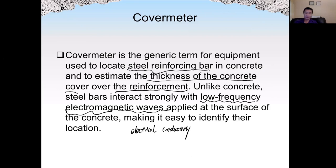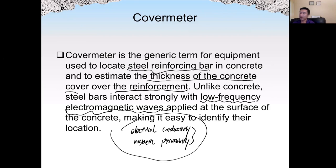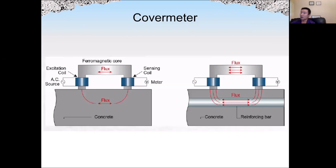For these two properties — electrical conductivity and magnetic permeability — concrete and steel or other metals are very different. Steel has much higher electrical conductivity and magnetic permeability than concrete. So the cover meter is very sensitive to changes in these properties, allowing it to detect the presence of steel or other metals. In the setup, we have ferromagnetic cores and an AC source to generate a circulating magnetic flux.